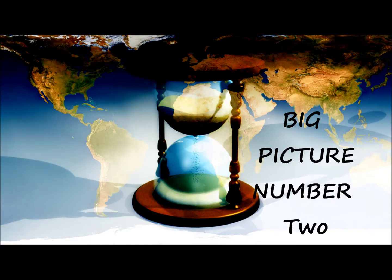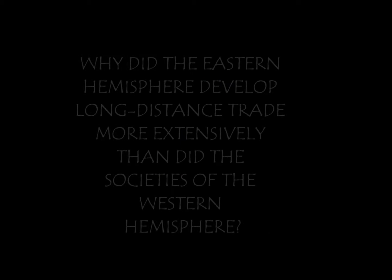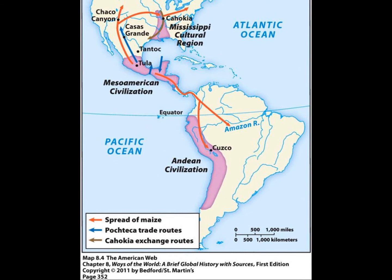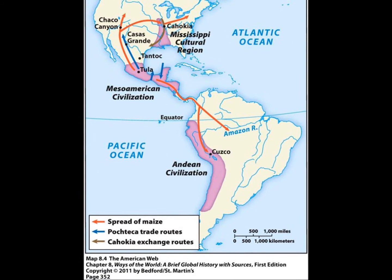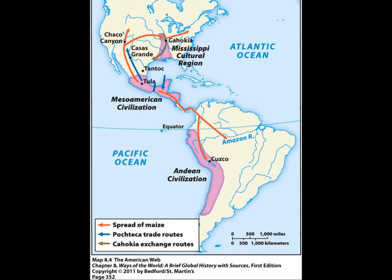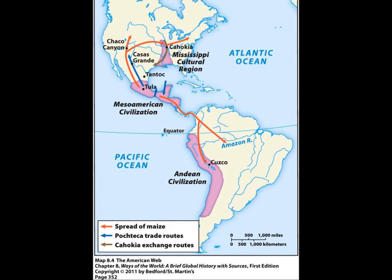The second question I want to deal with is: why did the Eastern Hemisphere develop long-distance trade more extensively than did the societies of the Western Hemisphere? The Western Hemisphere did not develop extensive long-distance trade as did the east for several reasons, including the absence of large domesticated mammals in the Americas and the absence of large oceanic vessels. The geographical realities of the Americas, especially the narrow bottleneck of Panama, which was largely covered by dense rainforest, made long-distance trade more difficult.